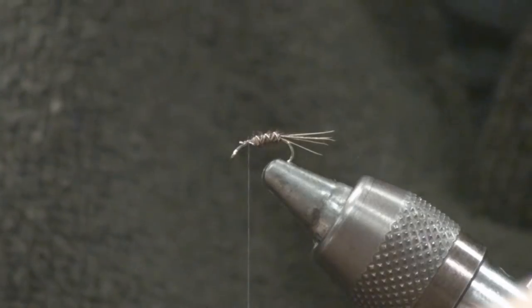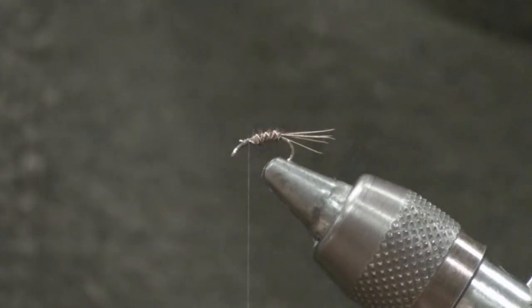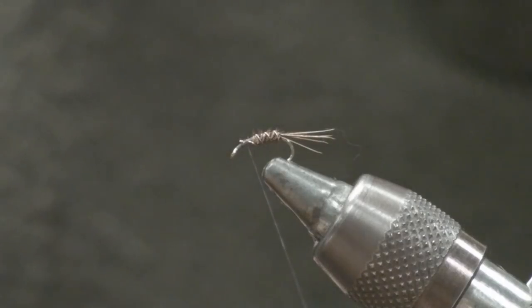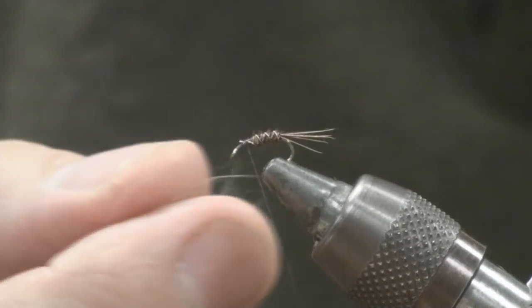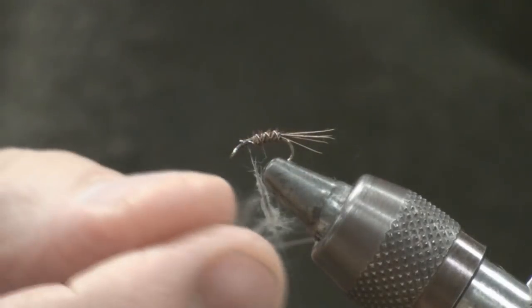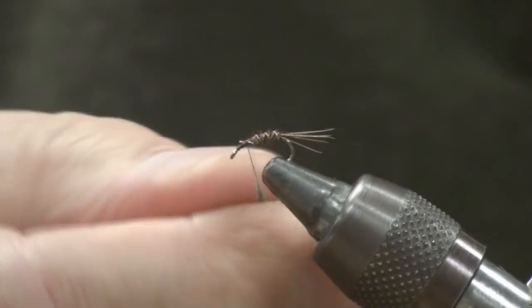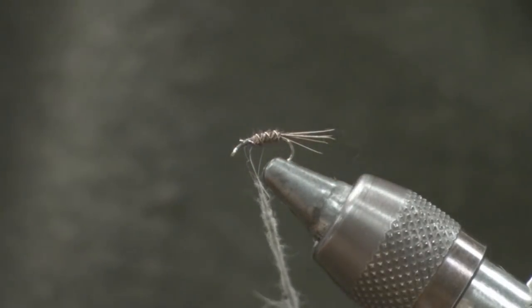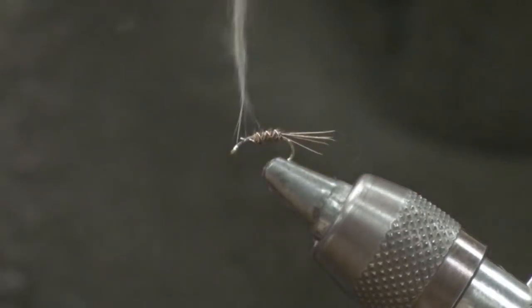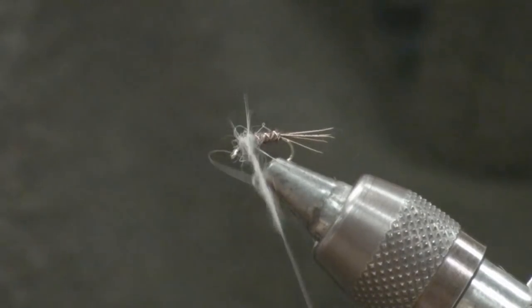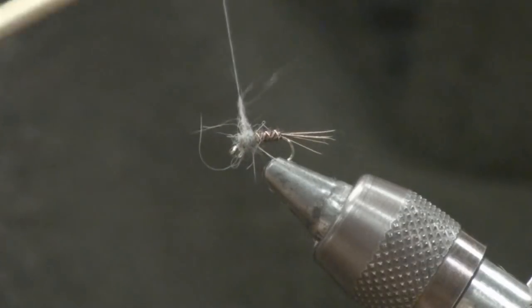Now I'll just take some gray dubbing for the thorax. I don't need a lot. I do like to have the thorax be a little bit wider than the body of the fly. Just build that up so it's just a little bit wider than the body of the fly.